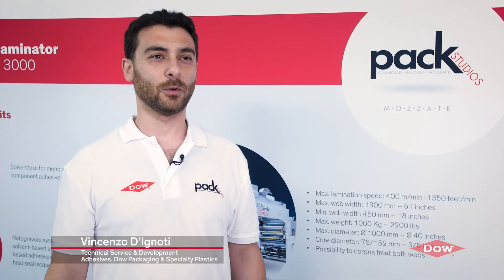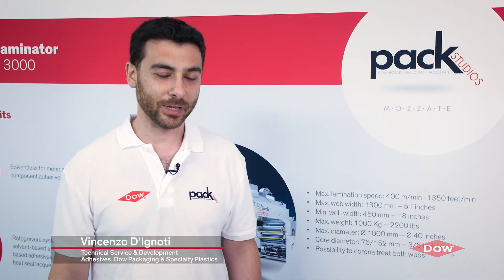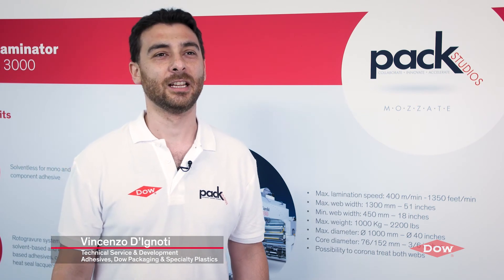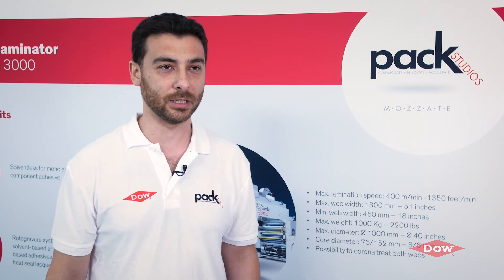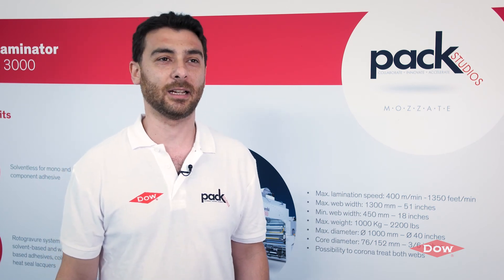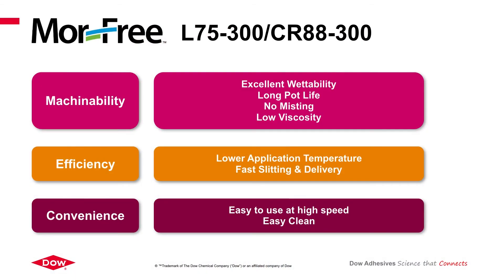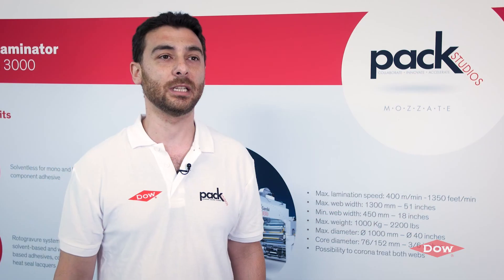The new combination Morphe L75-300 in combination with the CR-88-300 is actually one of the best products you can have in the segment of general purpose adhesive. The main characteristics are based on very nice wettability at high lamination speed, extended pot life, no misting at high lamination speed, and low viscosity. It is very easy to use as an adhesive, and what is really important, especially for the operators, is the easy cleaning.